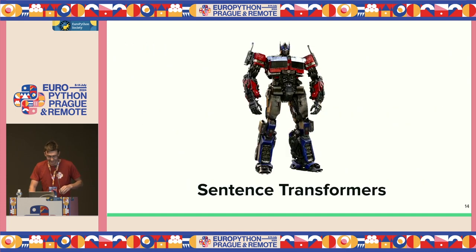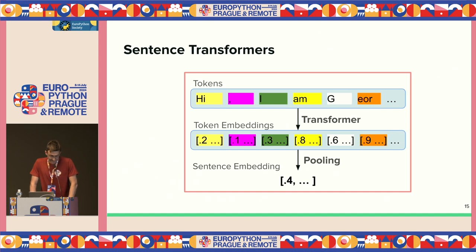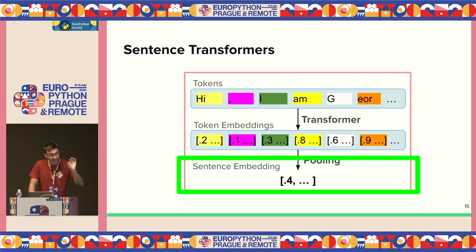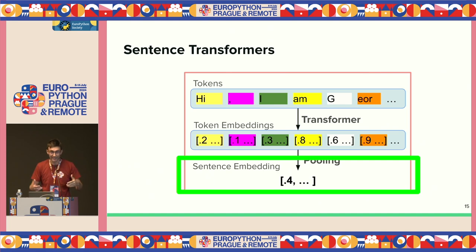So what's suitable for representing sentences? Sentence transformers. Sentence transformers are fine-tuned regular transformer encoders pre-trained to provide the right sentence representation. They don't focus on tokens anymore — they focus on the last layer, on the sentence embedding we're looking for.